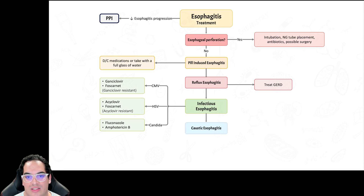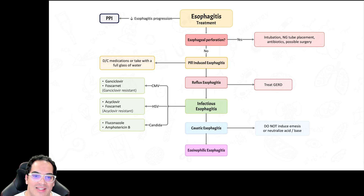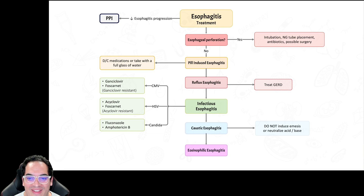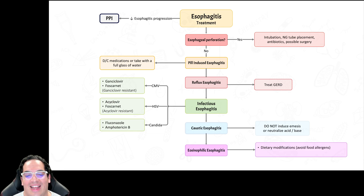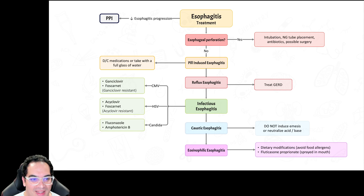For caustic esophagitis, management is supportive care — but two very high-yield points: do NOT induce emesis, as it will worsen the esophagitis; and do NOT attempt to neutralize the acid or base, as that will also worsen it. For eosinophilic esophagitis: remove the offending food allergens, and treat with fluticasone propionate spray — spray it into the mouth as a corticosteroid to reduce the eosinophilic response.